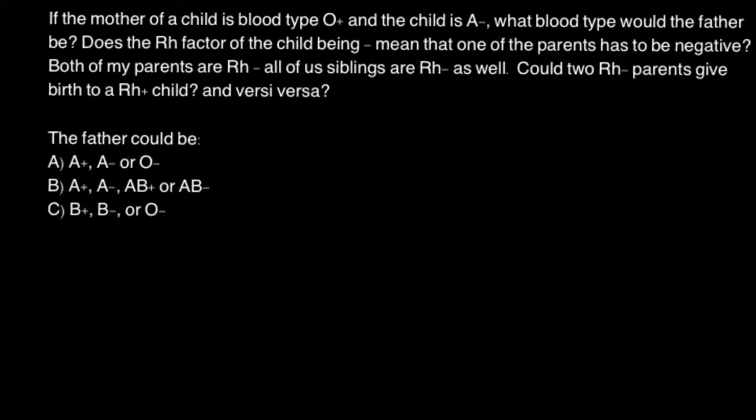Hello and welcome to Nikola's genetics lessons. Today I'm going to talk about the ABO blood group system and Rh positive and negative factor. Today's problem is: if the mother of a child is blood type O positive and the child is A negative, what blood type would the father be?